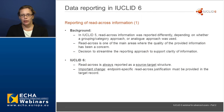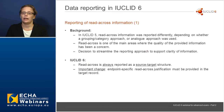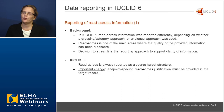Moving on to the second topic: read-across information. In IUCLID 5, read-across information was reported differently depending on whether the registrant used the grouping or category approach, or the analog approach. Read-across is one of the main areas where the quality of information has been a concern. As a consequence, we've decided to streamline the reporting approach. In IUCLID 6, read-across is always reported as a source-target structure, so it always needs source and target information separately. Another important change is that the endpoint-specific read-across justification must be provided inside the target record.